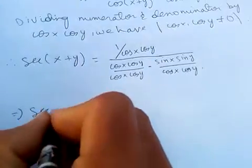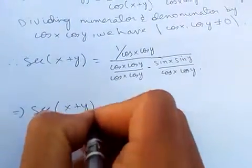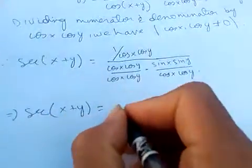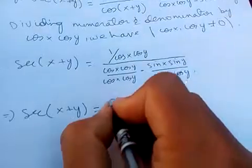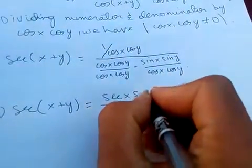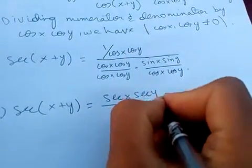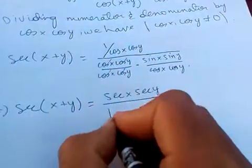Which gives sec(x + y) equals 1 over cos(x)cos(y), so the cos(x)cos(y) terms cancel.